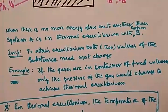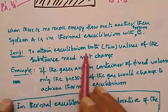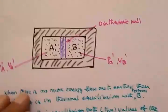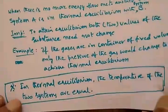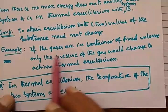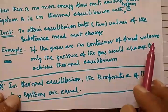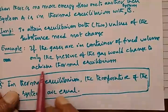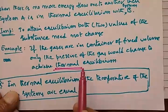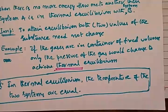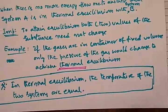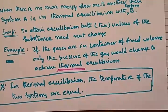To attain equilibrium, both values of the substance need not change. For example, if gases are in a container of fixed volume, only the pressure of the gas would change to achieve thermal equilibrium. If volume is fixed, the pressure will change. So both values need not change — only one value changing is enough.